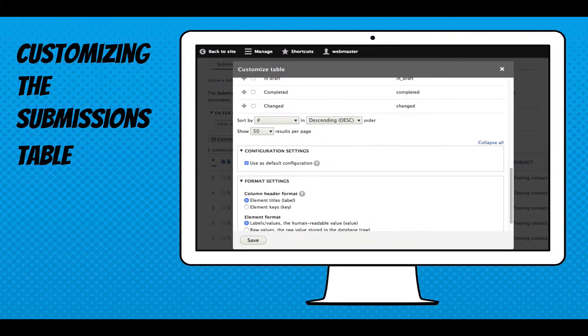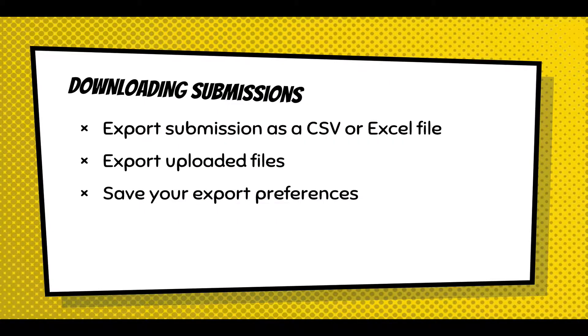Customizing the table, there's a little dialogue where you can pick which columns you want displayed and the number of pages. You can also decide if you want to display the key of the element or the label. Downloading submissions — you can export into a CSV or an Excel file. You can also take uploaded files and generate an archive, and you can save these settings, which is helpful when you keep coming back and pulling data out.